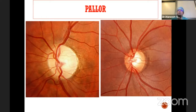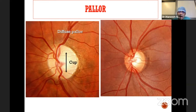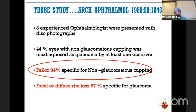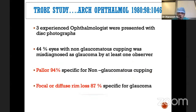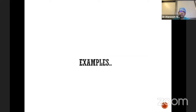In general, the remaining neuroretinal rim in glaucoma patients is almost always pink. You don't see a white or pale rim in a typical glaucoma patient. However, in certain types — such as patients with very high pressure like an acute angle-closure attack, or patients with uveitic glaucoma with associated papillitis — pallor can occur. A landmark study in Archives of Ophthalmology found pallor to be almost 94% specific for non-glaucomatous cupping, while focal rim loss is 87% specific for glaucoma. So whenever you see pallor, try to exclude non-glaucomatous causes before diagnosing glaucoma.